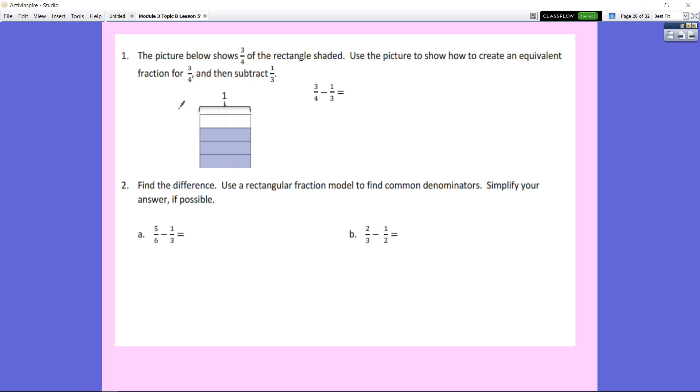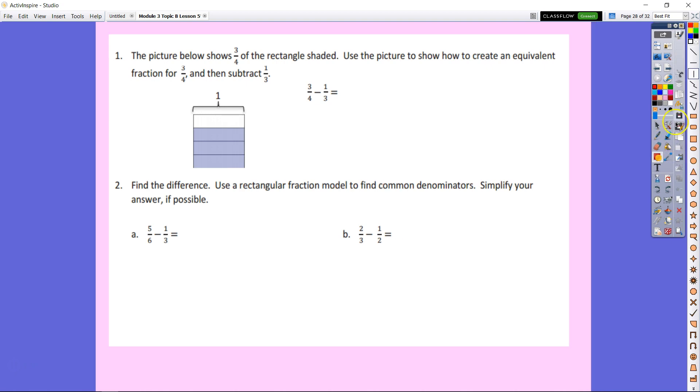Let's look at number one. The picture below shows three-fourths of the rectangle shaded. Use the picture to show how to create an equivalent fraction for three-fourths, and then you're going to subtract one-third. So, let's say three-fourths. We're going to split this into three-fourths. We can say three-fourths minus one-third. Let's go ahead and make a fraction for one-third.